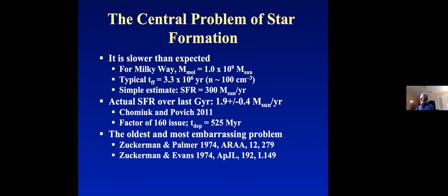Another way to look at it is the depletion time — how long it would take all of the mass of molecular clouds to turn into stars — is about 500 million years, about half a gigayear. That's much longer than the lifetimes we think molecular clouds have. This basic problem was set forth in a couple of papers by Ben Zuckerman; I was involved in one of those, starting as a grad student and published as a postdoc. So we're talking about almost 50 years ago — it's the oldest and most embarrassing problem of star formation.